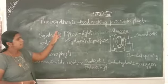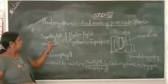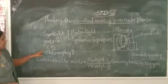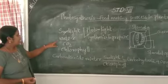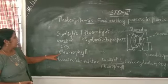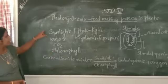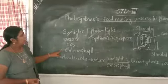What are the factors essential for photosynthesis? Sunlight, water, carbon dioxide and chlorophyll. Once again, sunlight, water, carbon dioxide and chlorophyll. These are the essential factors for photosynthesis.